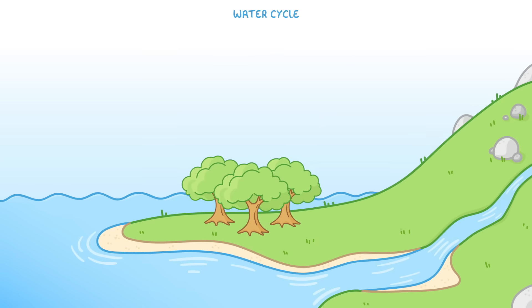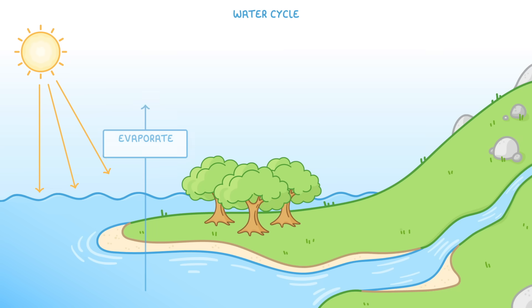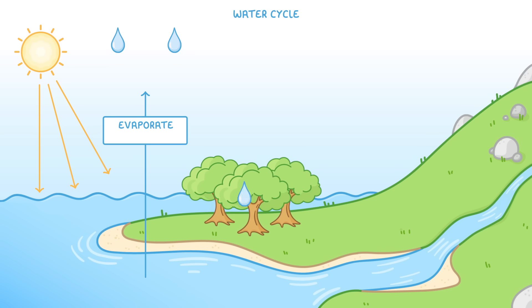For the water cycle, let's imagine a typical environment which includes some land and water. Because it's a cycle, we can start our explanation anywhere. So let's say that the first step is that energy from the sun comes down and causes some of the water to evaporate. This can be water from lakes, oceans, rivers, but also water on land — for example water in puddles or water in the soil.